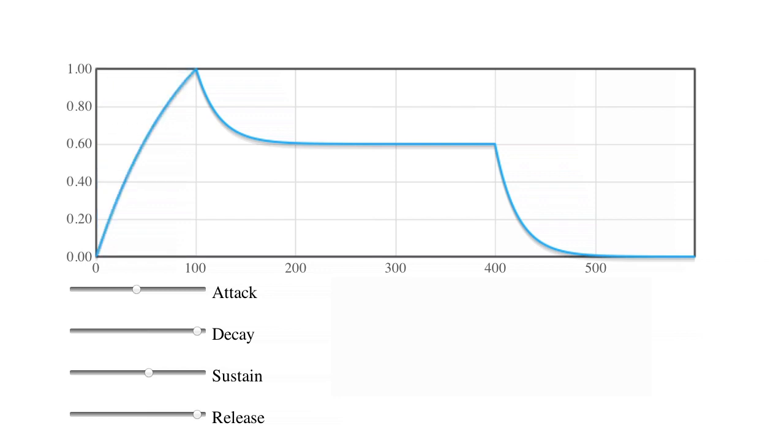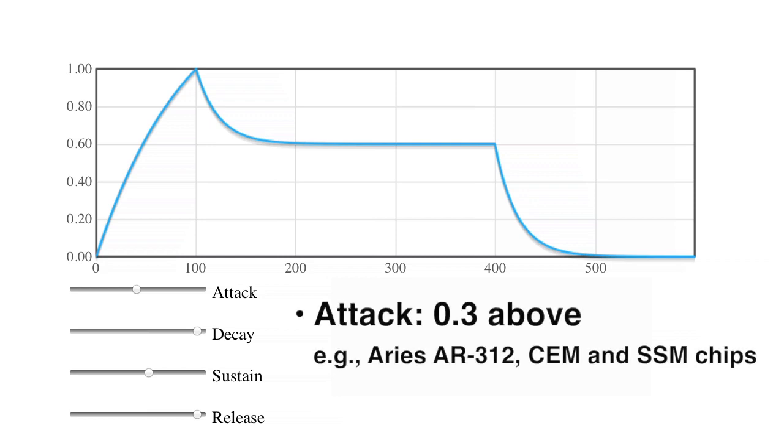To truncate the exponential, we simply charge towards a target that's higher than the attack peak, but terminate the attack phase when we reach the peak. The default settings in my code are for an attack target 0.3 above the peak, matching my old Aries modular envelope generators, which have a 10-volt envelope peak while charging towards 13 volts.